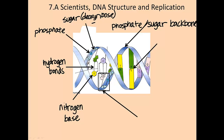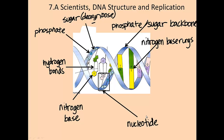Then we throw in the nitrogenous bases — the complementary base pairs: adenine and thymine, cytosine and guanine — we throw those in as nitrogenous base pairs. And we throw all three of those — the phosphate, the sugar, and the nitrogenous base, regardless of which one it is — and we call that a nucleotide.